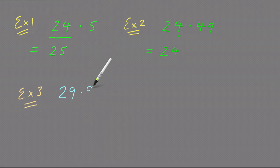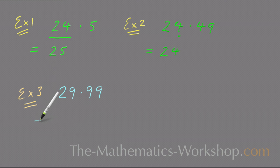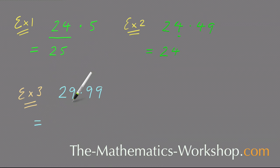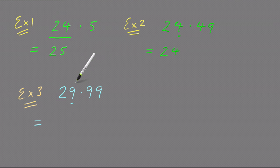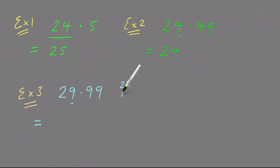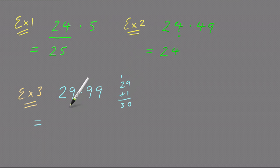In example three I want to round 29.99 to the nearest whole number, and this is where it can get a little tricky. The number in the units column is nine, and the number on its right is also nine — which is five or more — so I have to round that nine up one. Nine plus one is ten: put down the zero, carry the one. Two plus one is three, giving us 30.